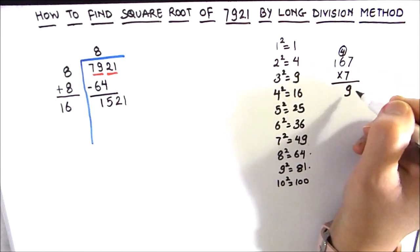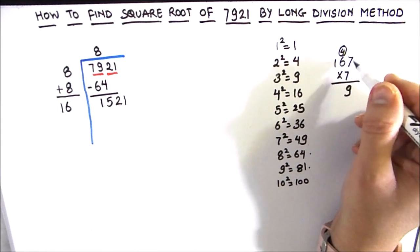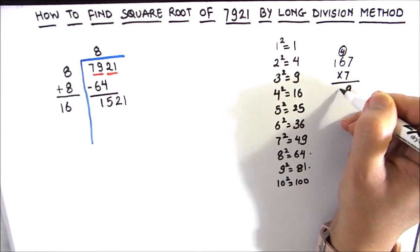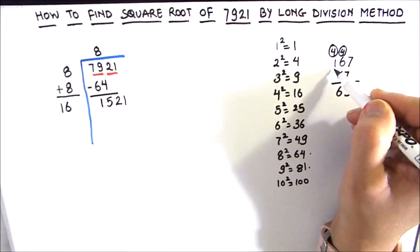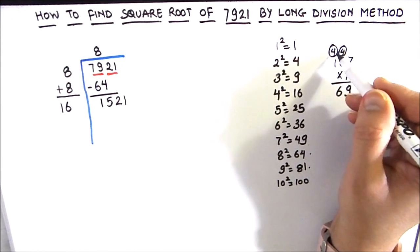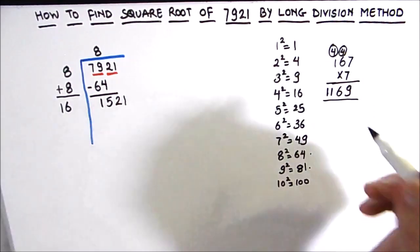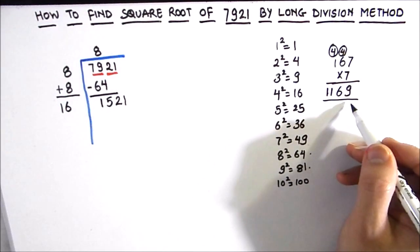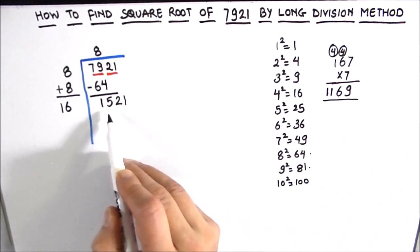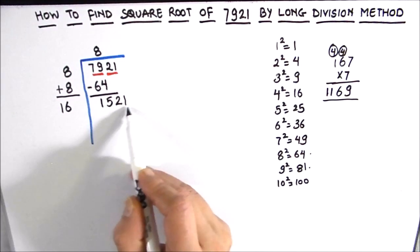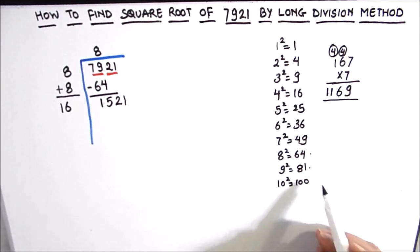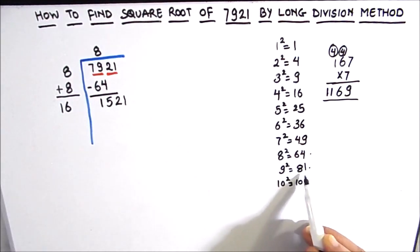Continuing: 4 carried over, 7×6=42, 42+4=46, carry 4; 7×1=7, 7+4=11. The result is 1169, which is less than 1521. We need a 1 in the units place, so let's try 9, since 9×9=81 gives 1 in the units place.